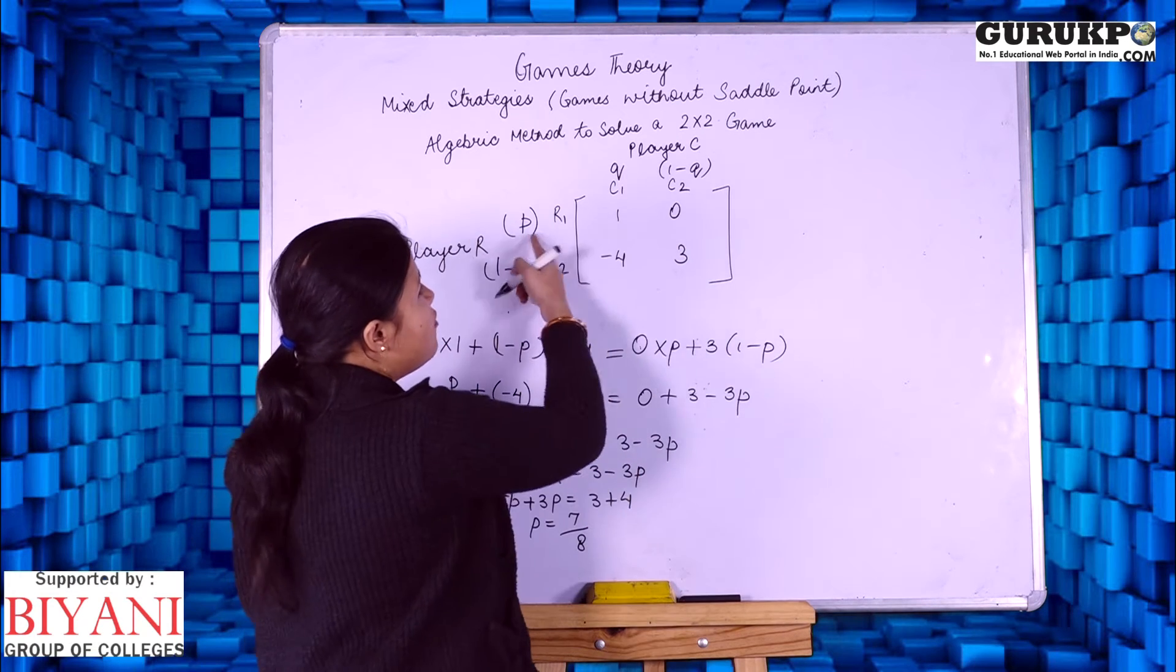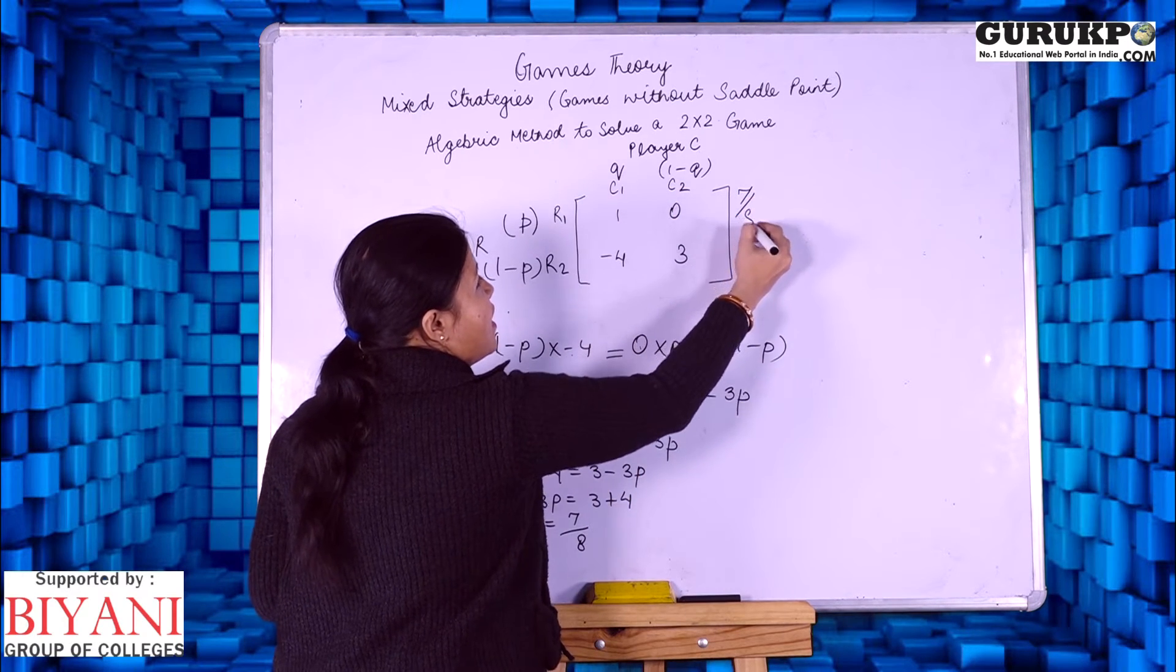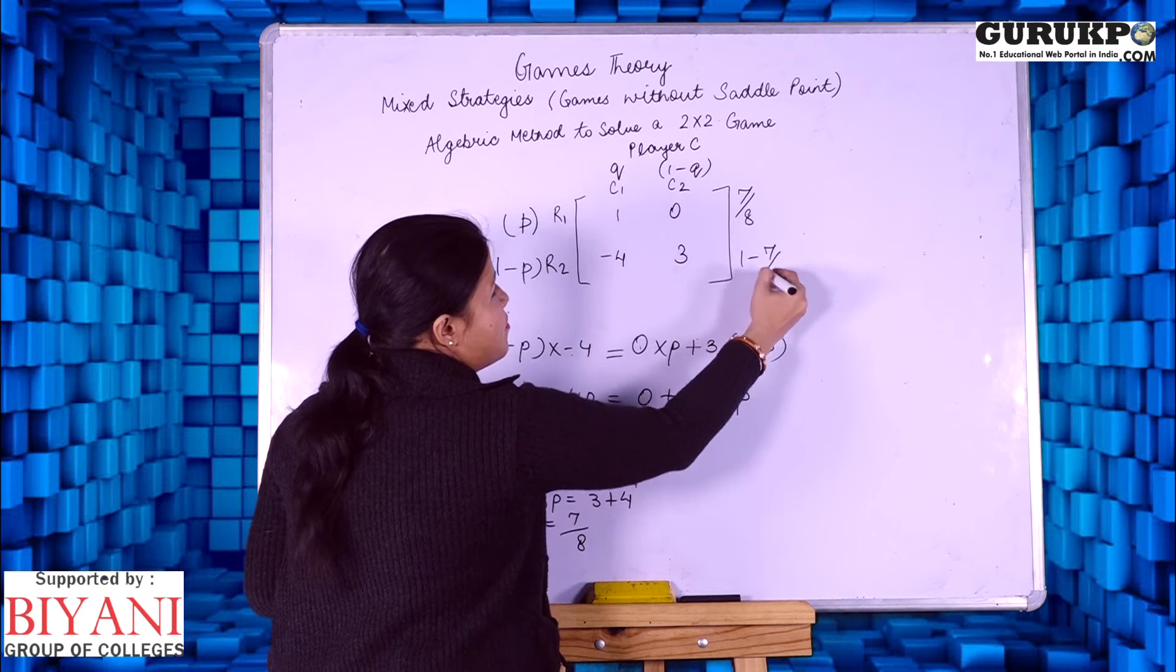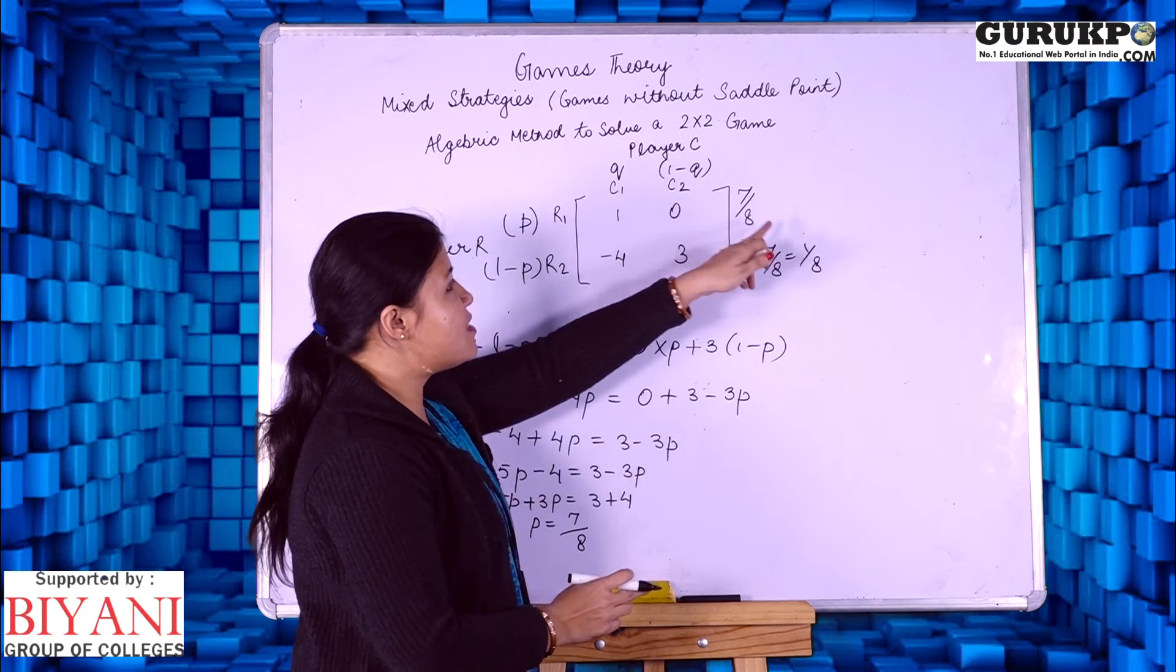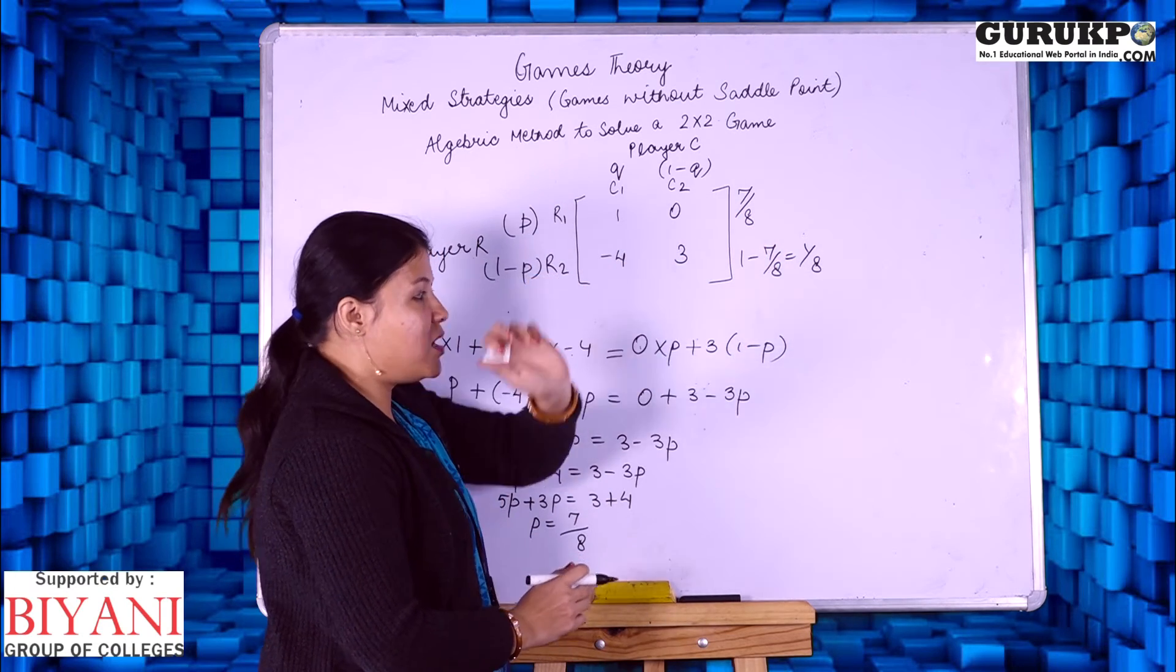The value of P is 7 by 8 and the other value is 1 minus 7 by 8 which is 1 by 8. This is the strategy for row player: 7 by 8 and 1 by 8.